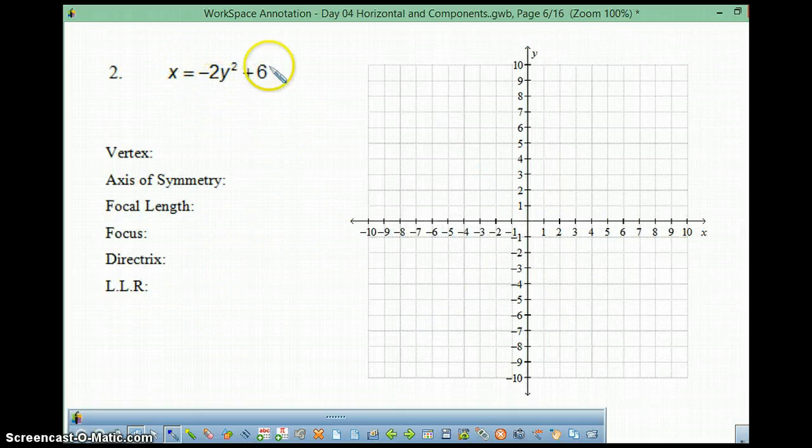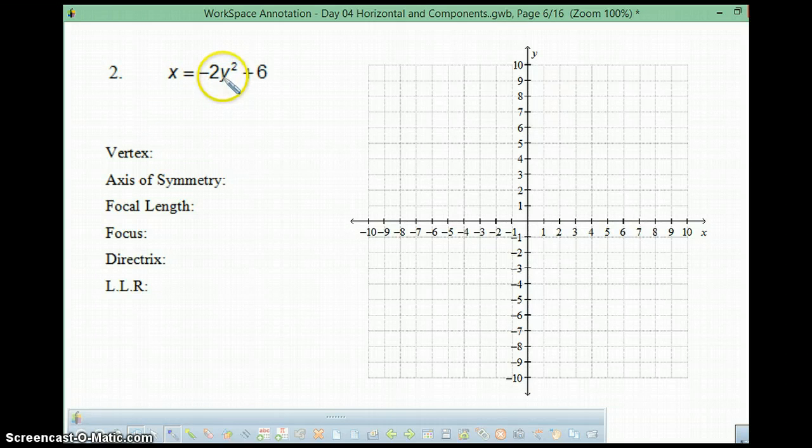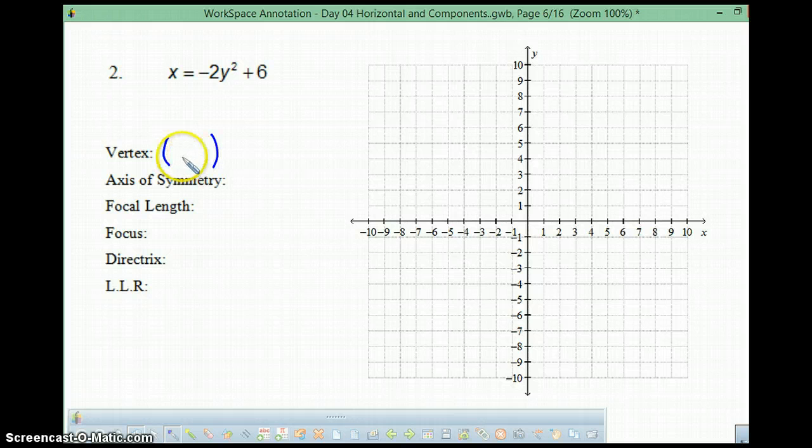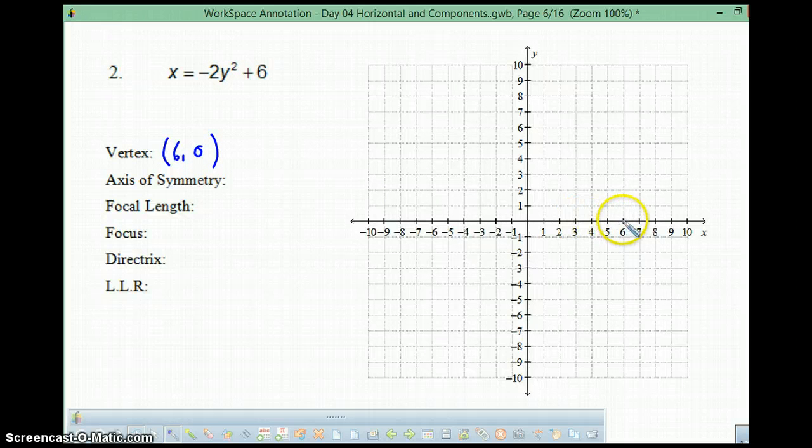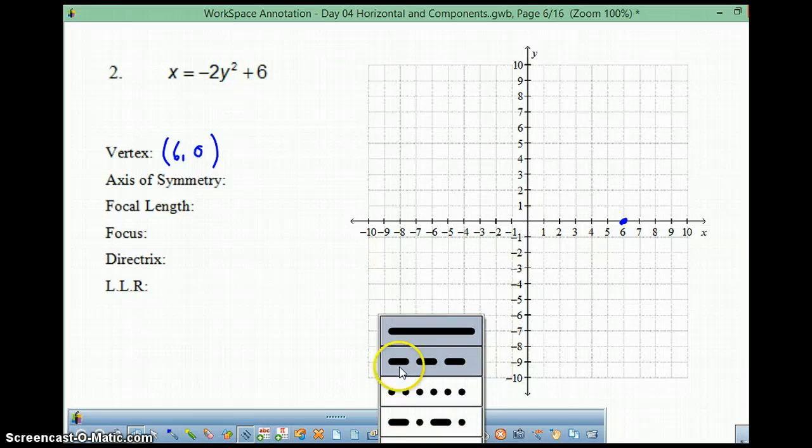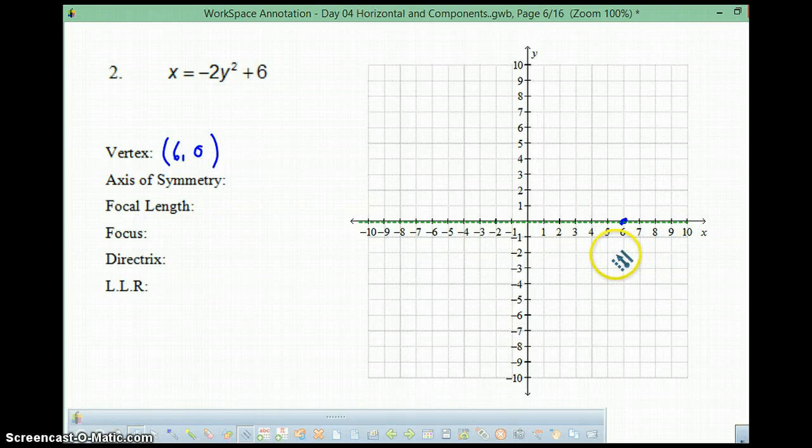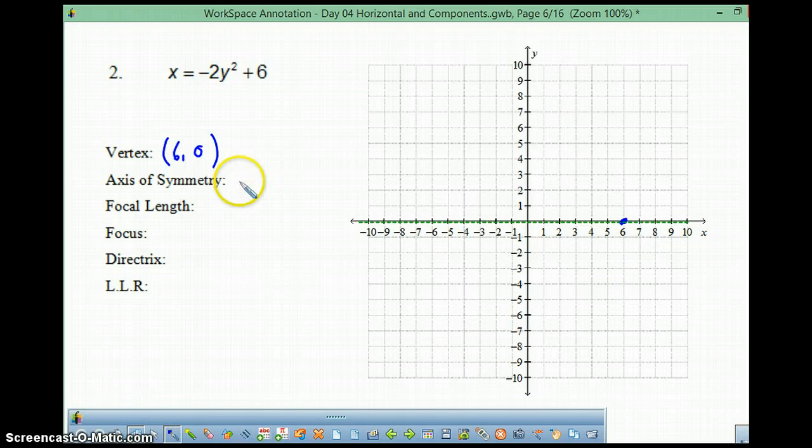Let's try another one. First of all, is this in vertex form? Yes, it is. We know that it's an x equals y squared. So, we've got a horizontal parabola going on. Vertex is at (6, 0) because this is y minus 0 squared. So, let's go ahead and plot that first. The axis of symmetry is going to be right down the middle of that line. So, it's going to go right here. Axis of symmetry is right on the x-axis. And the equation for that is y equals 0.